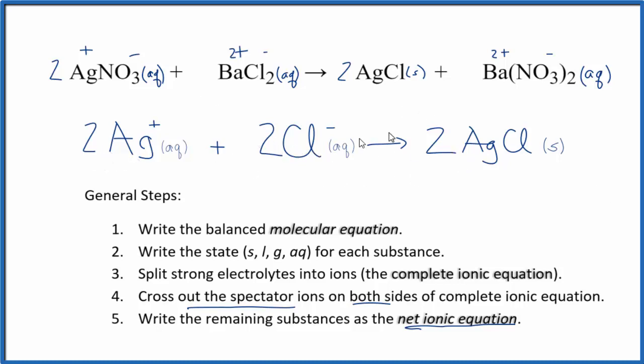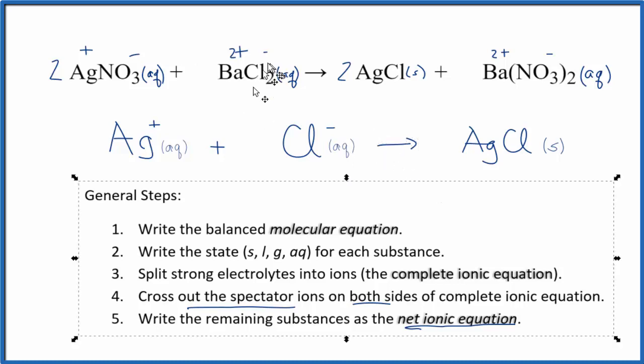But we should do one more thing. We have 2 in front of each of these substances. Since they're all the same, we can reduce that down to 1. We don't write the 1. This is a better net ionic equation for silver nitrate plus barium chloride - we have the lowest coefficients in front of each. This is Dr. B., thanks for watching.